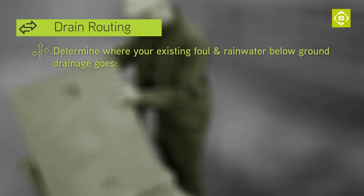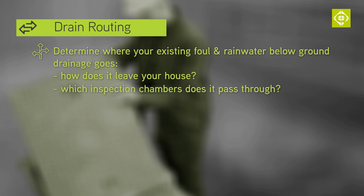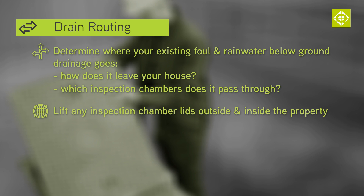I'll talk about build over agreements later. One of the first steps you should take when planning your project is to try and work out where all of your existing foul and rainwater below-ground drainage is actually going — how it leaves your house and which inspection chambers it goes through. You should lift the inspection chamber lids in your garden, or even inside your property if you have any.